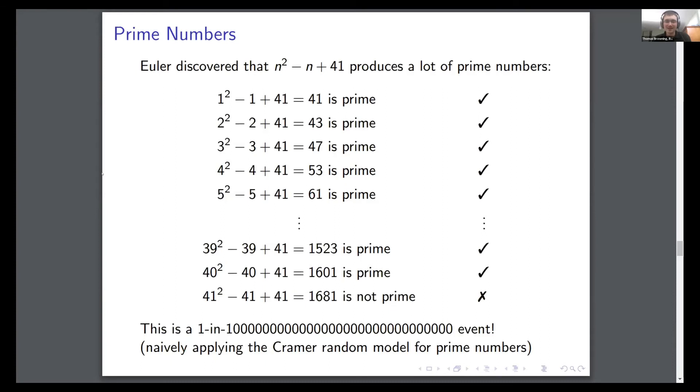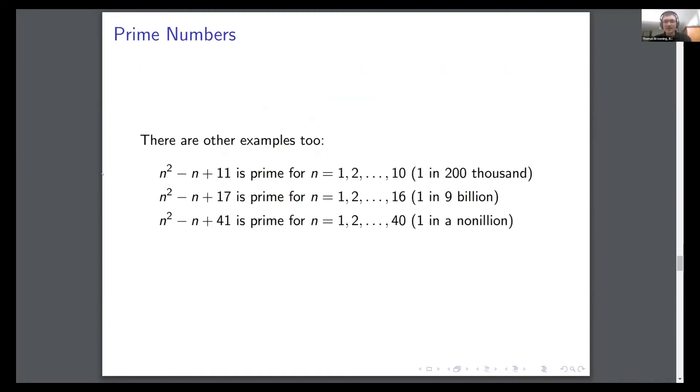And this is really surprising. If you use some naive probability, assuming these things are independently all independent events, this ends up being like a one in a nonillion chance, one in 10 to the 30. Now this isn't quite right. I know there's mathematicians here who will pull me out on this because these aren't actually independent. But if you use naive models, this is a very unlikely event. And even with more sophisticated methods, this is still incredibly unlikely.